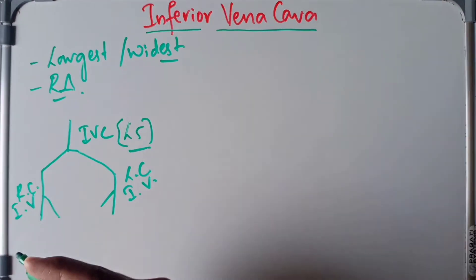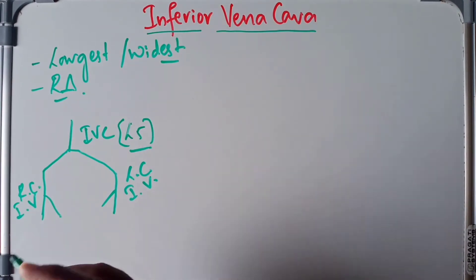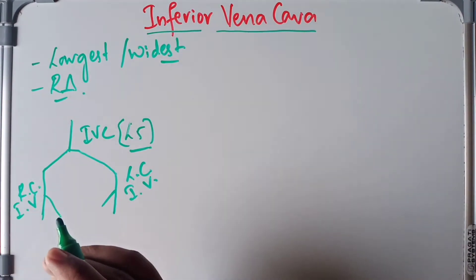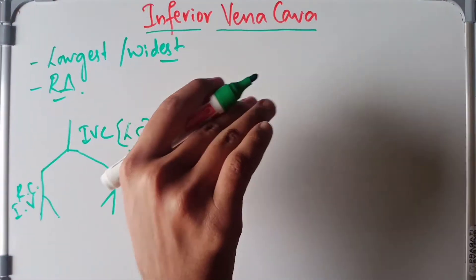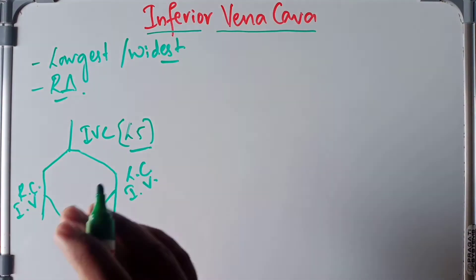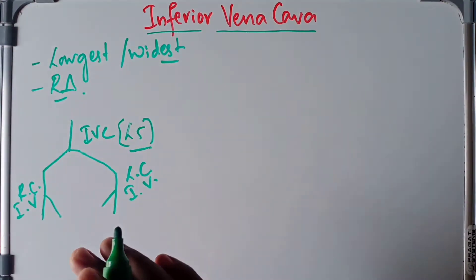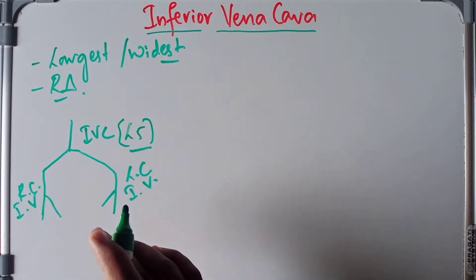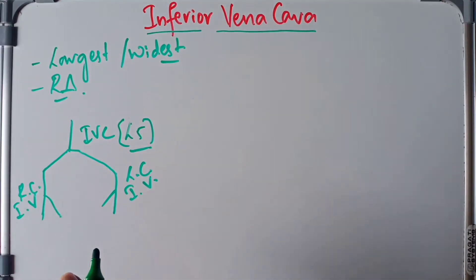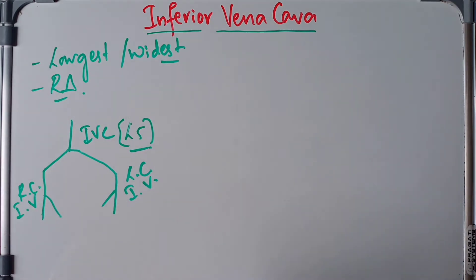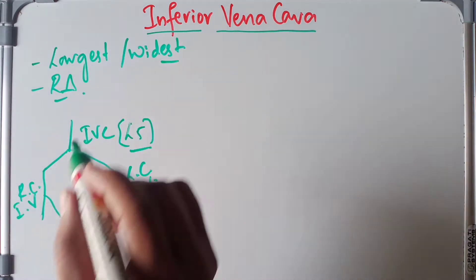From its formation at L5, the IVC ascends in front of the vertebral column on the right side of the aorta. It then arches forward on the right crus of the diaphragm and finally terminates by draining into the right atrium of the heart.